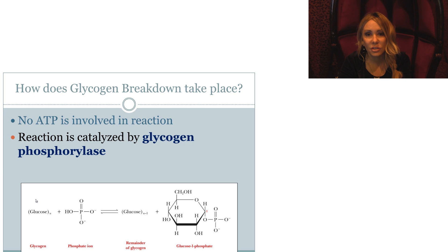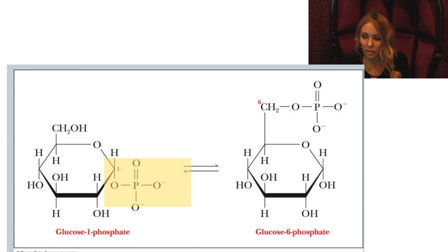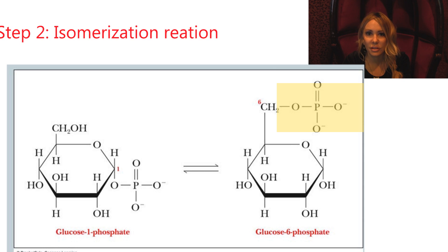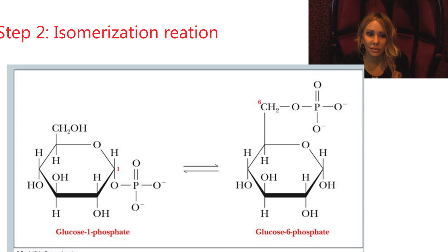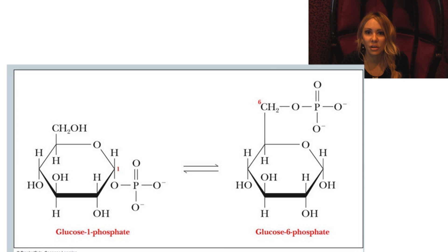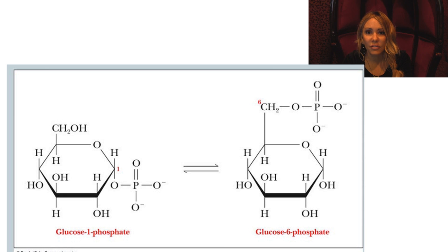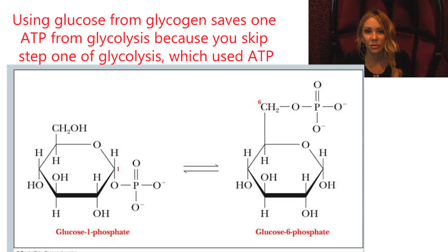In the second reaction, we move that phosphate from C1 to C6 — it's an isomerization reaction — and we get glucose-6-phosphate. Glucose-6-phosphate should look familiar: it's the product of the first reaction of glycolysis, which is basically what happens whenever glucose enters the cell, putting the ball and chain known as a phosphate on C6. So now we're skipping that first reaction of glycolysis, which cost us an ATP molecule.